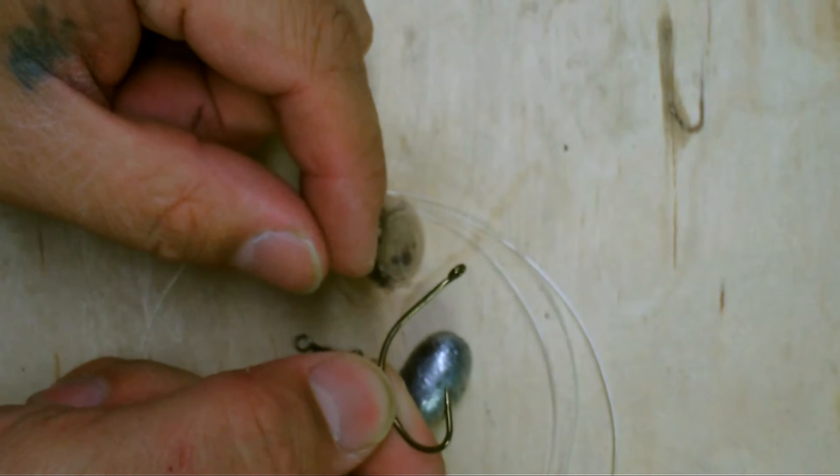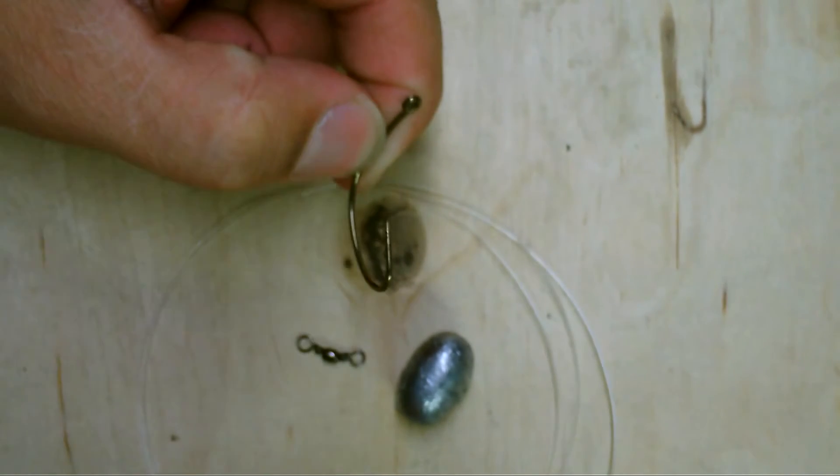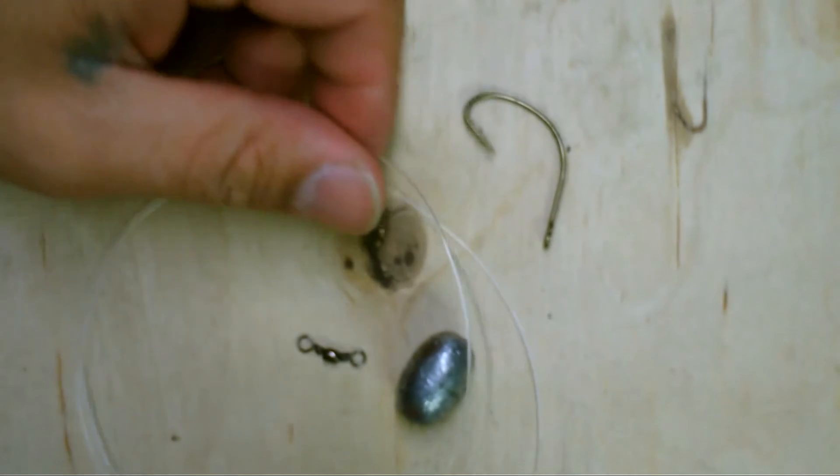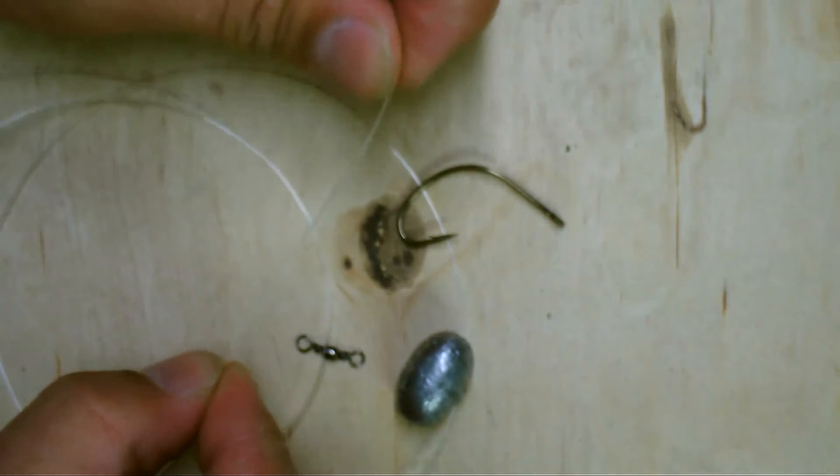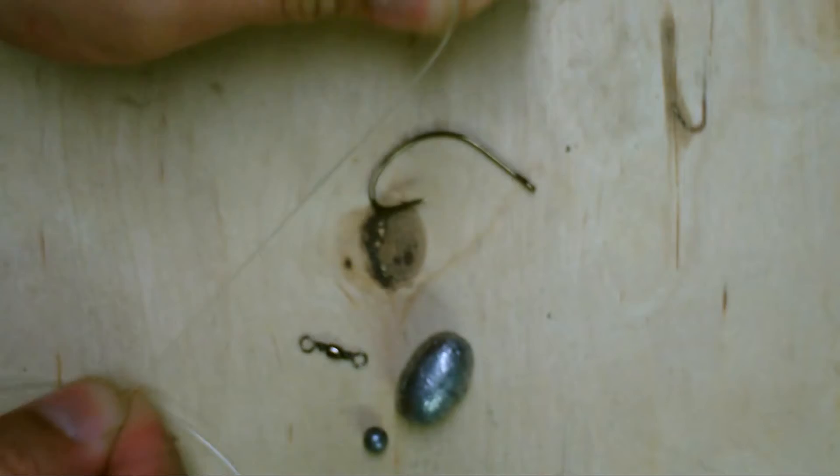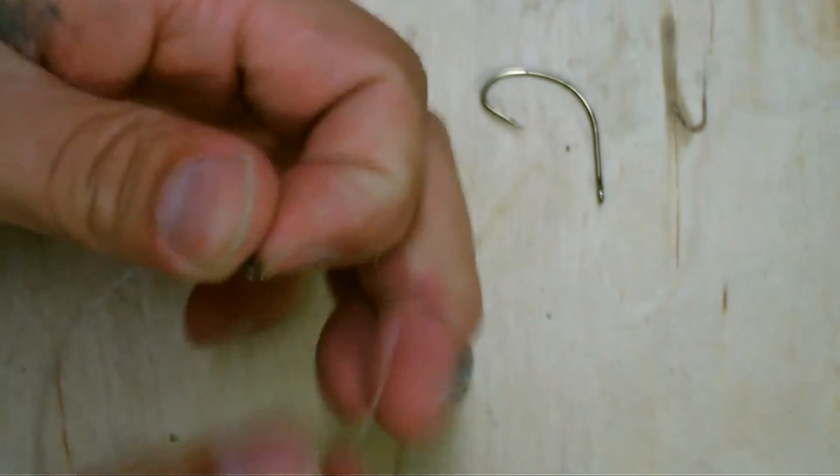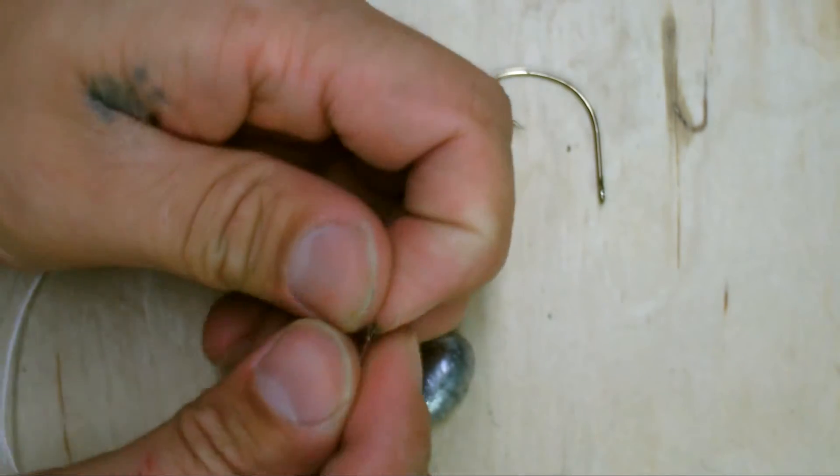And then we're just going to use whatever hook that's the correct size for the species of fish you're trying to catch. Typically though, I use one or two. These are Eagle Claw laser sharps, these are size 1-0s. And the leader, you're going to want a nice fluorocarbon, but this is just a heavy mono so that you can see it better. Okay, first thing you do is take your swivel and make your improved clinch knot.